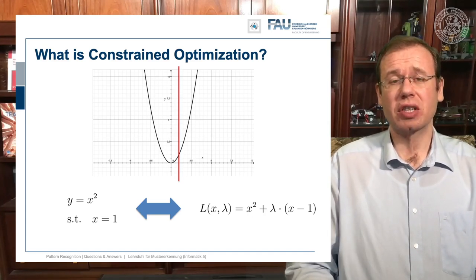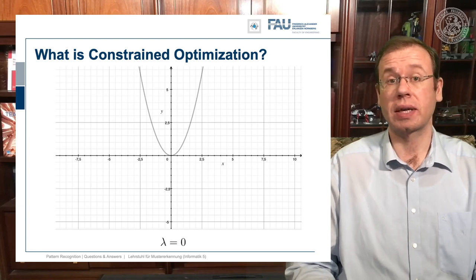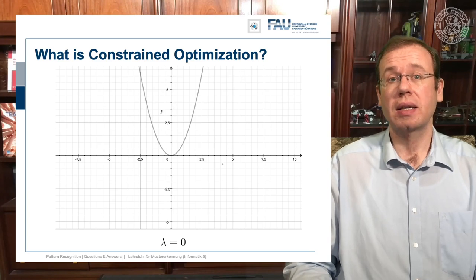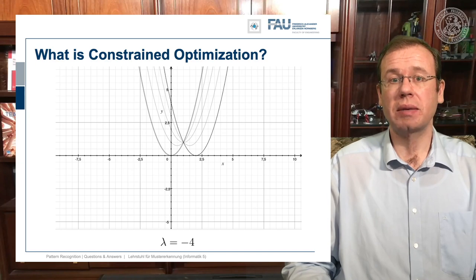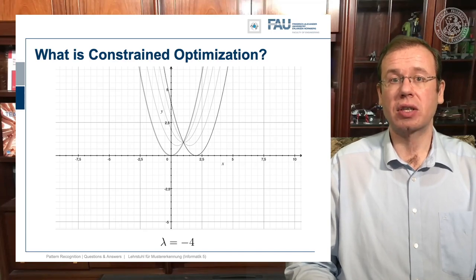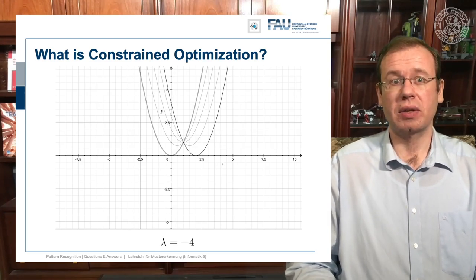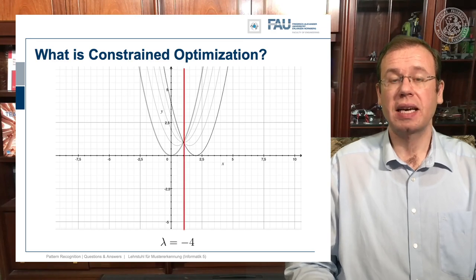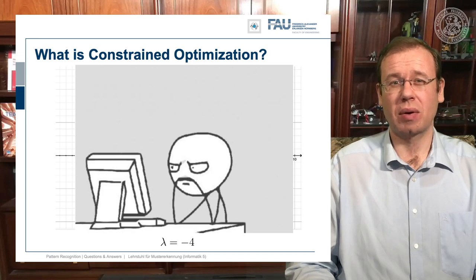Let's look at how this function behaves with different lambdas. With lambda zero, we just have the original function — the constraint is gone. Now let's play with lambda: choosing minus one, minus two, minus three, minus four. You see that by choosing different lambdas, we change the function — the function is shifting up and down. And you can see the position where we have the peak is exactly the position where our constraint is fulfilled.